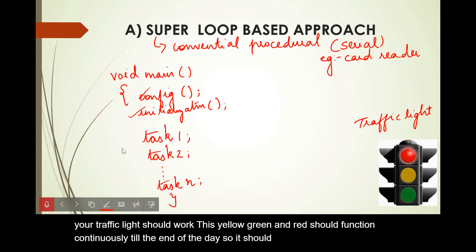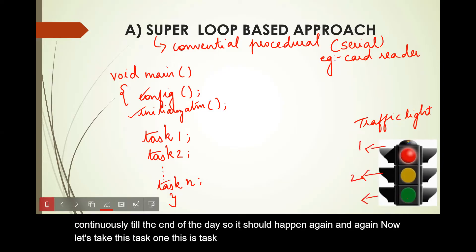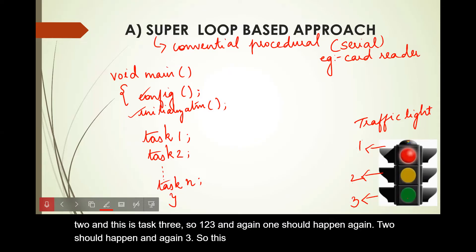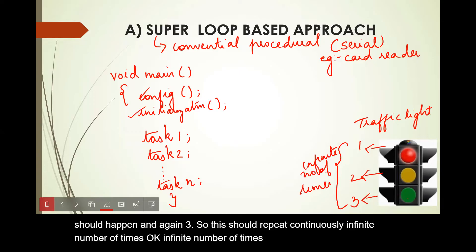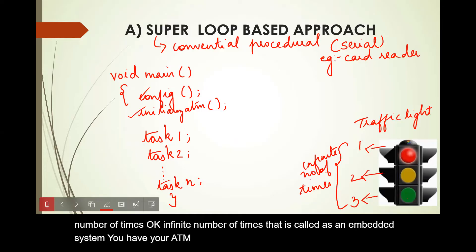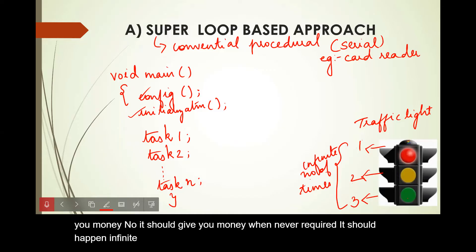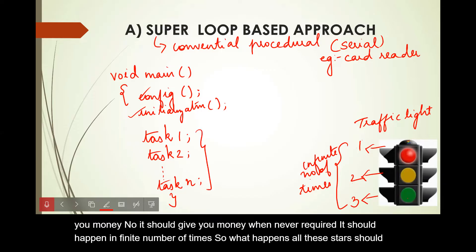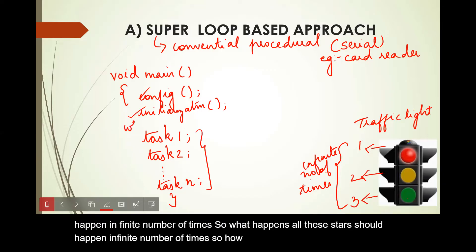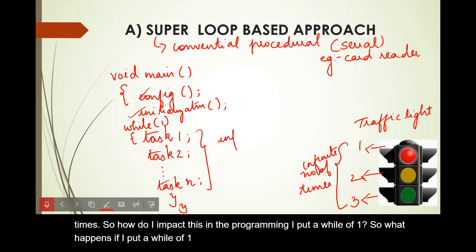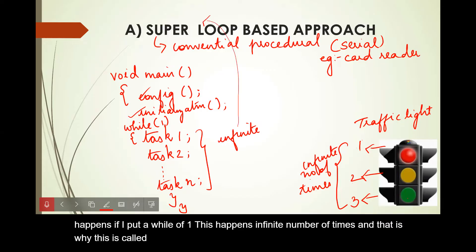So it should happen again and again. Task one, task two, task three — and again one, two, three. This should repeat continuously an infinite number of times. That is what an embedded system does. Your ATM should give you money whenever required, not just once. So all these tasks should execute infinite number of times. How do I achieve this in programming? I put a while(1). This makes it execute infinite number of times, and that is why this is called the super loop based approach.